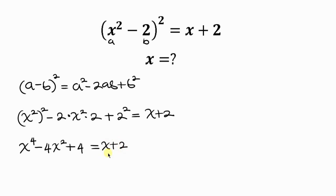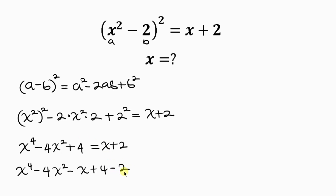Now let's move what we have on the right to the left. So we have x⁴ - 4x², then moving x gives minus x, plus 4, and moving 2 to the left gives minus 2. Simplifying further: x⁴ - 4x² - x + 2 = 0.